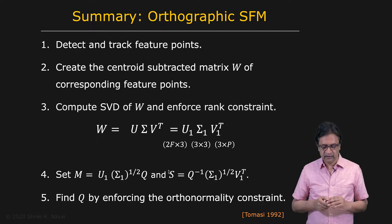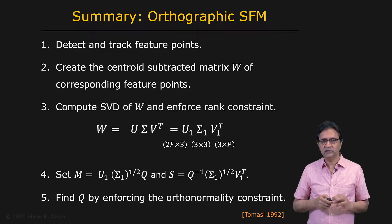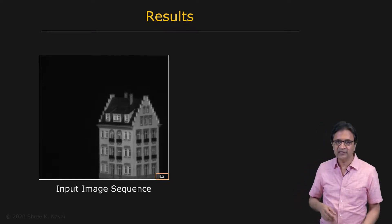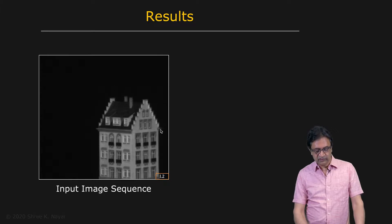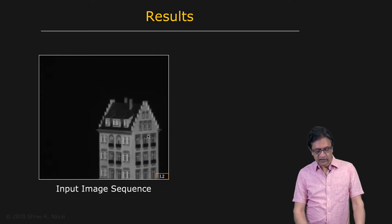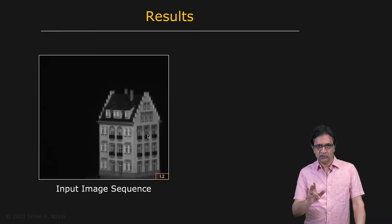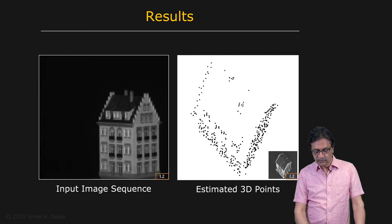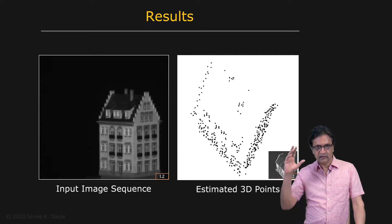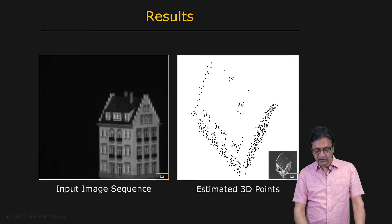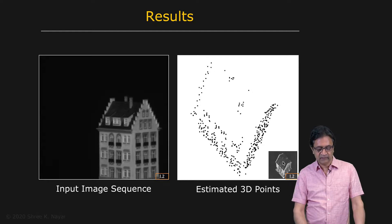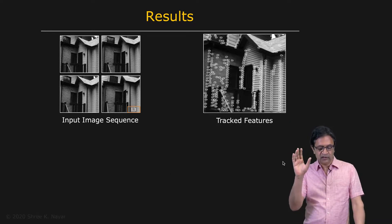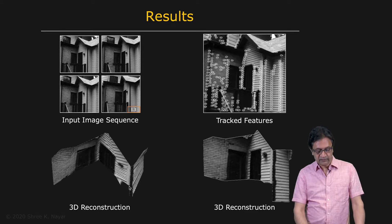Let's look at some early examples. This was developed by Tomasi almost 30 years ago, and these are some of his first results. Here is a sequence of images with tracked features, and using the orthographic assumption, the algorithm constructs the 3D locations of points — a rendered view from a different 3D perspective of a 3D house — and the reconstruction looks fairly realistic. Here's another example from an outdoor scene where tracked features produce a reconstruction shown from two different perspectives.